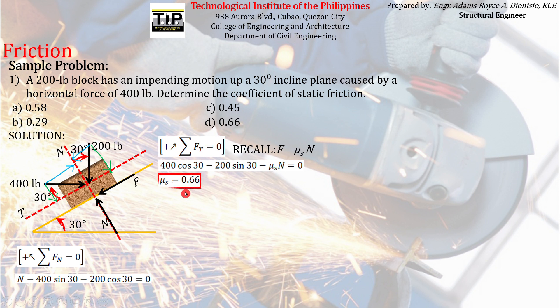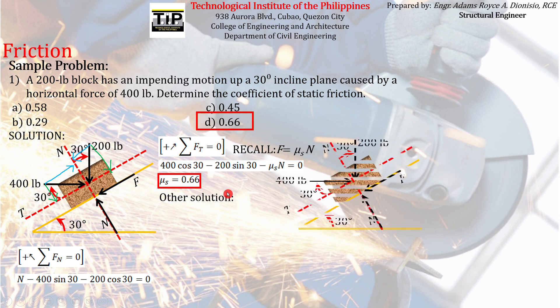Solving the two equations using a calculator (mode 5-1 for two equations, two unknowns), or by expressing N from the first equation and substituting into the second, we get μs = 0.66. The correct answer is letter D, 0.66.